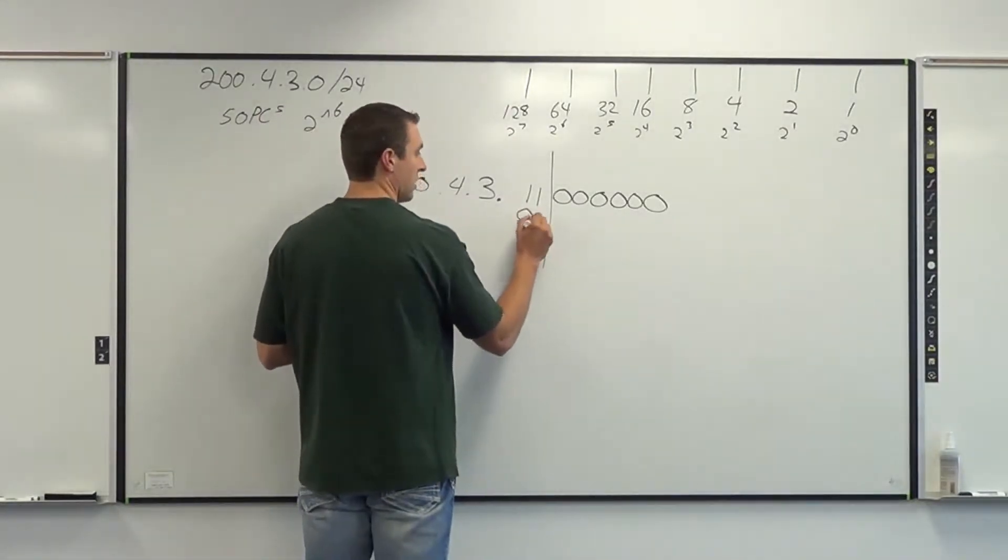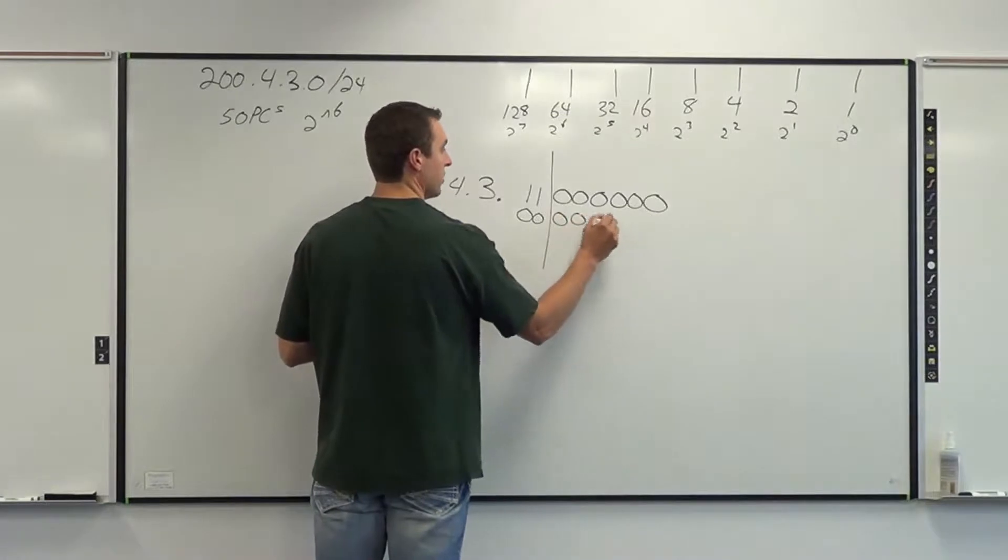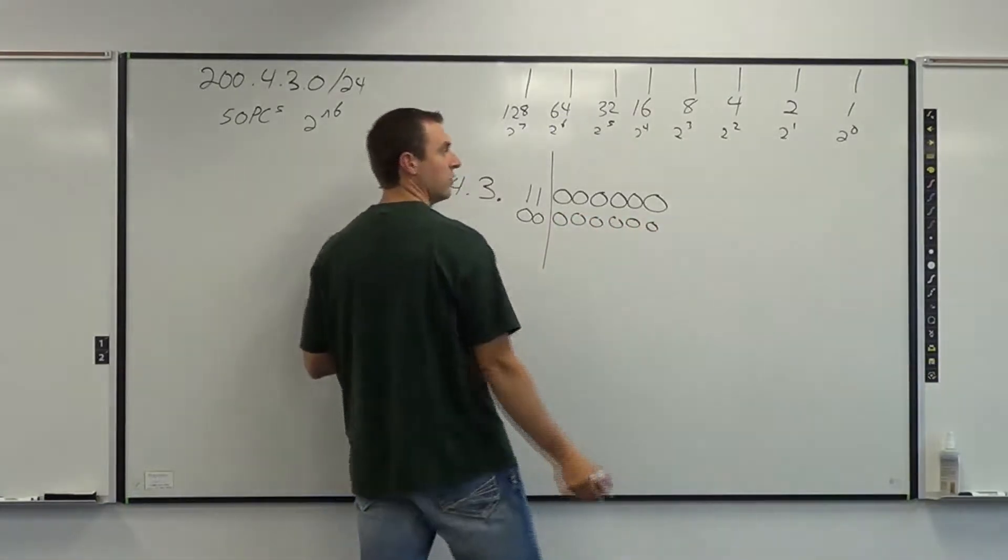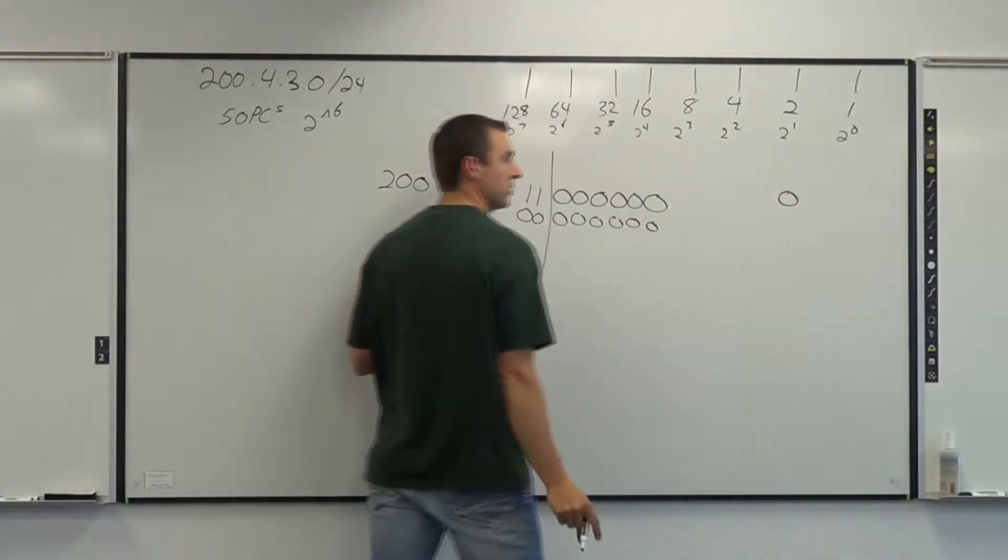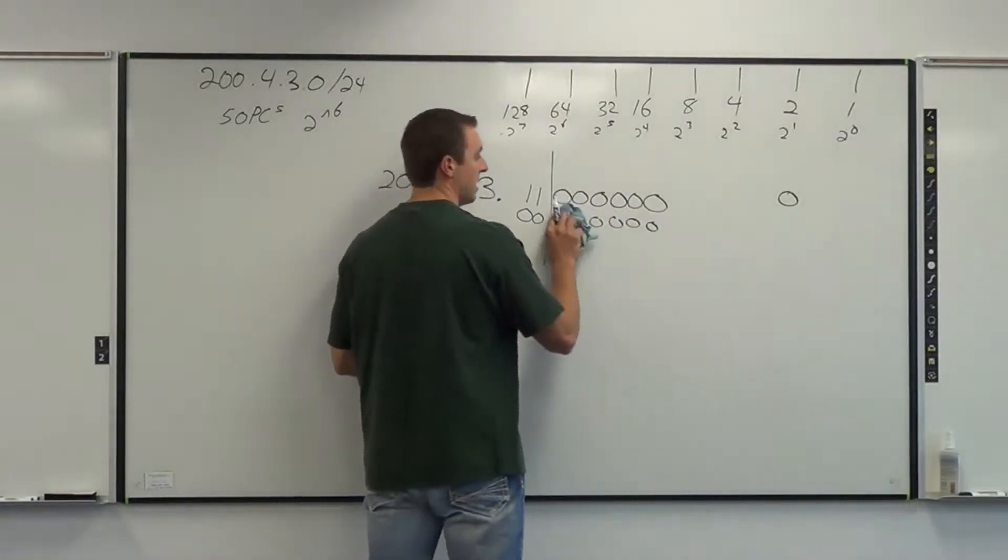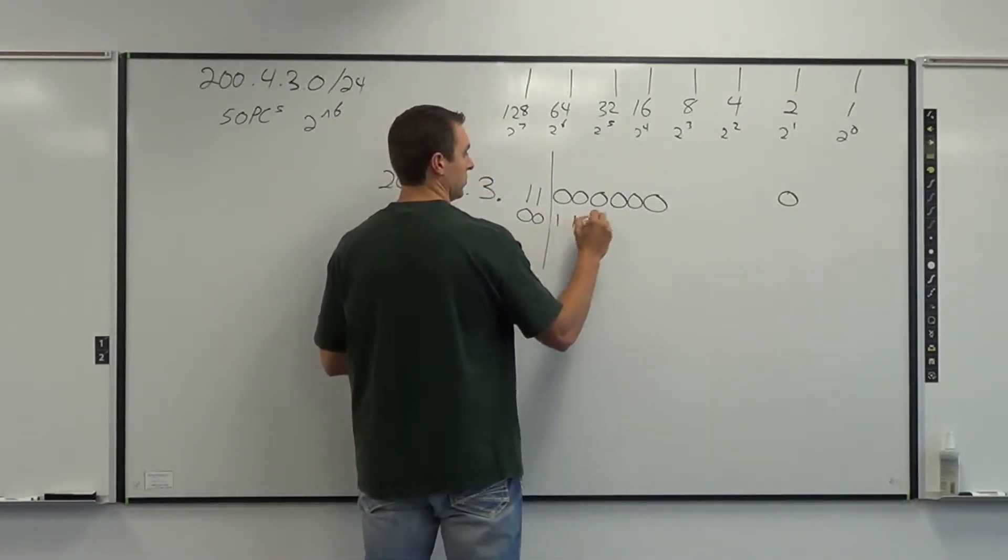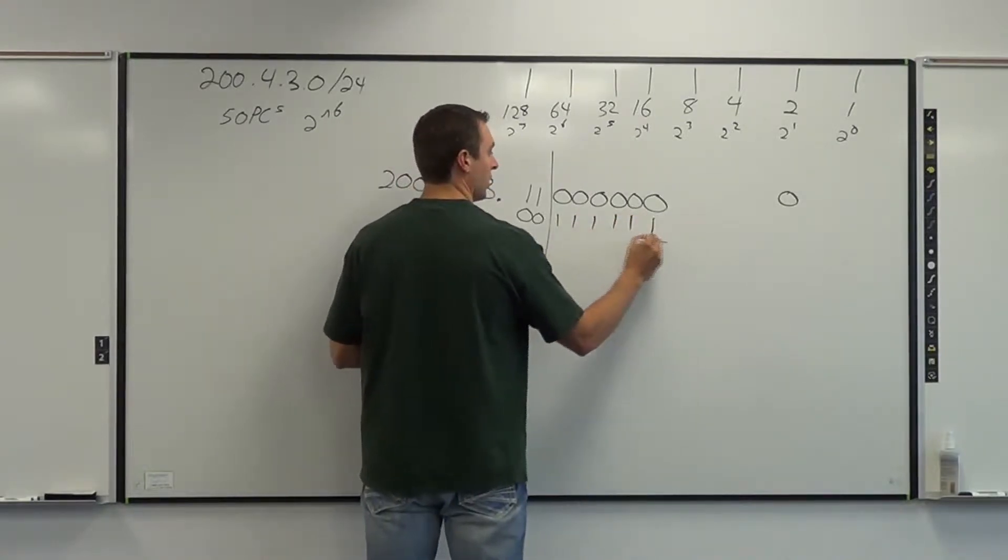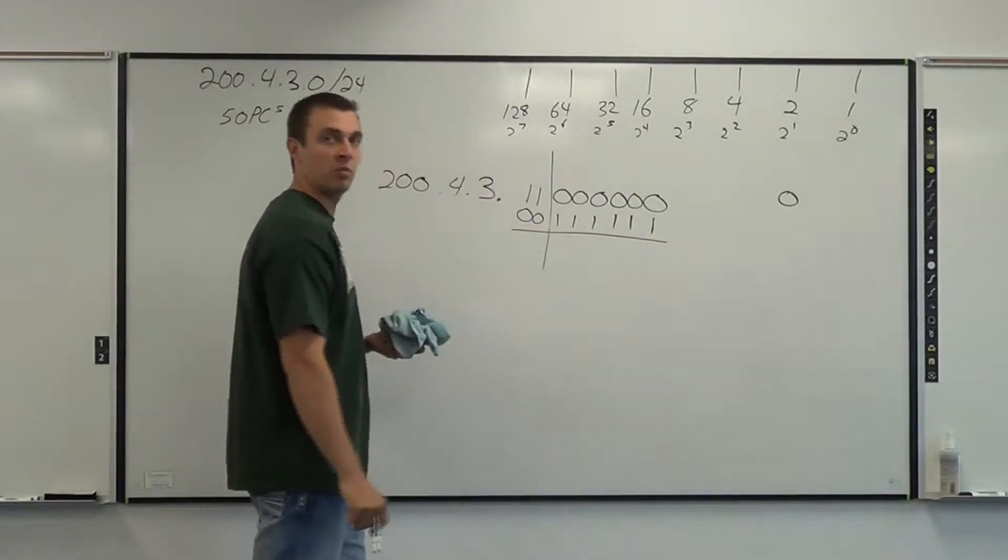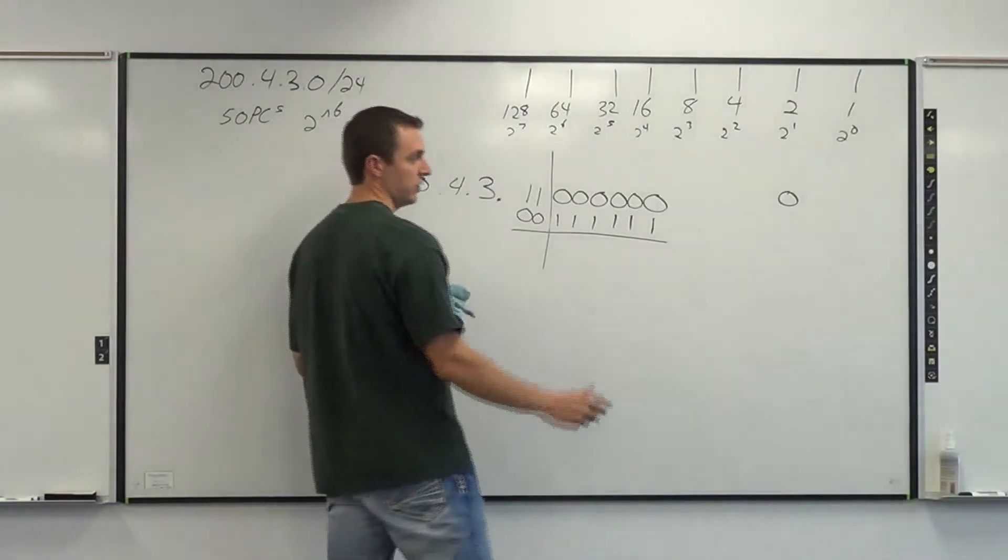Method's still the same. Make everything zeros right underneath that. That gives us our first network ID, which is 0. Change the right-hand side to all 1s. Figure out what that number is in decimal, and that number in decimal is 63.